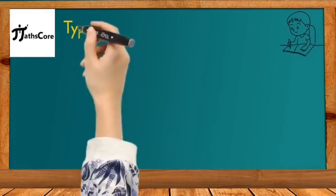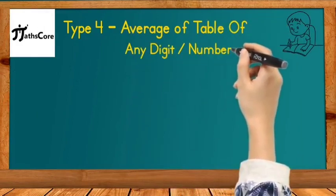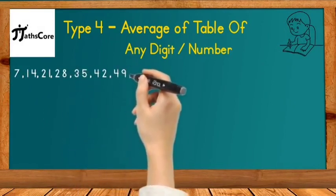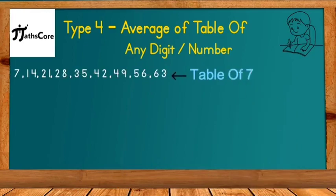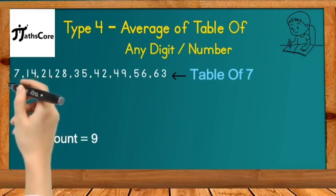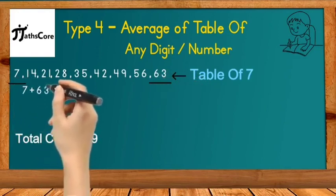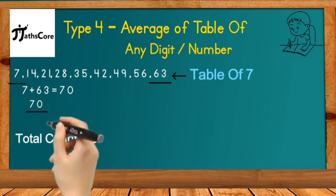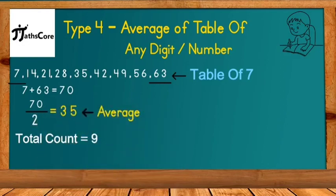Let us solve some examples on Type 4, which is average of the table of any digit or number. First example is 7, 14, 21, 28, 35, 42, 49, 56, 63. You can see this is the table of 7, which includes 9 numbers. To find the average, we use the Vedic math concept: add first and last number together. 7 plus 63 is equal to 70. Now divide 70 by 2. 70 divided by 2 is equal to 35, which is the average of all these 9 numbers.